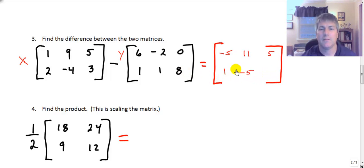And 3 minus 8. Wait a minute, I made a mistake. No, that's right. And then 3 minus 8 is also negative 5. And that is the answer to that one.